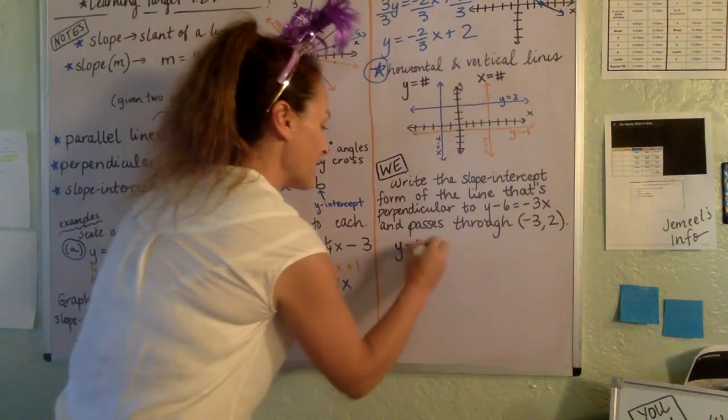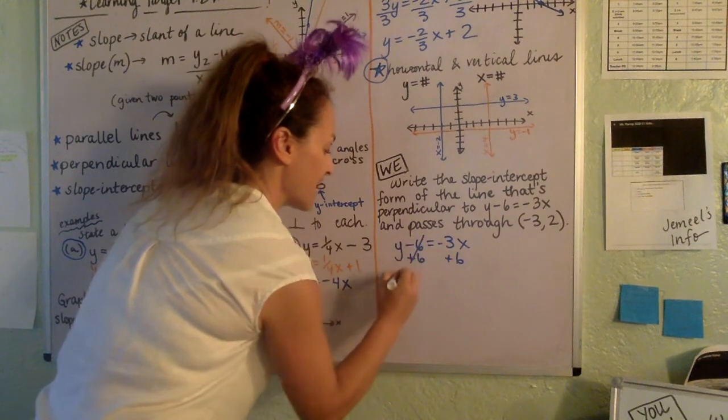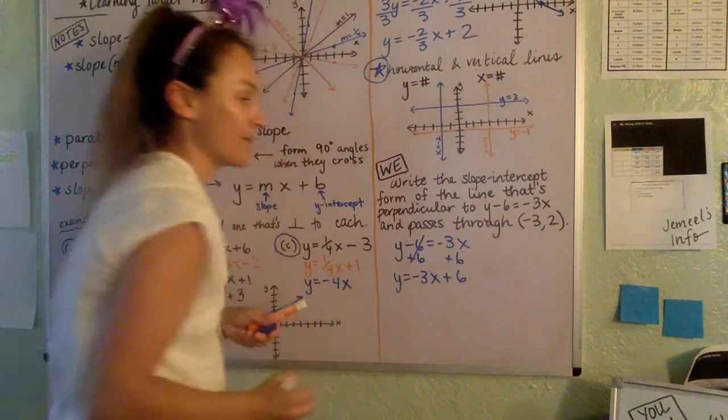So let's just start with our line here. And if we just go ahead and add the 6 over to get it into Y equals MX plus B form, now we're here.